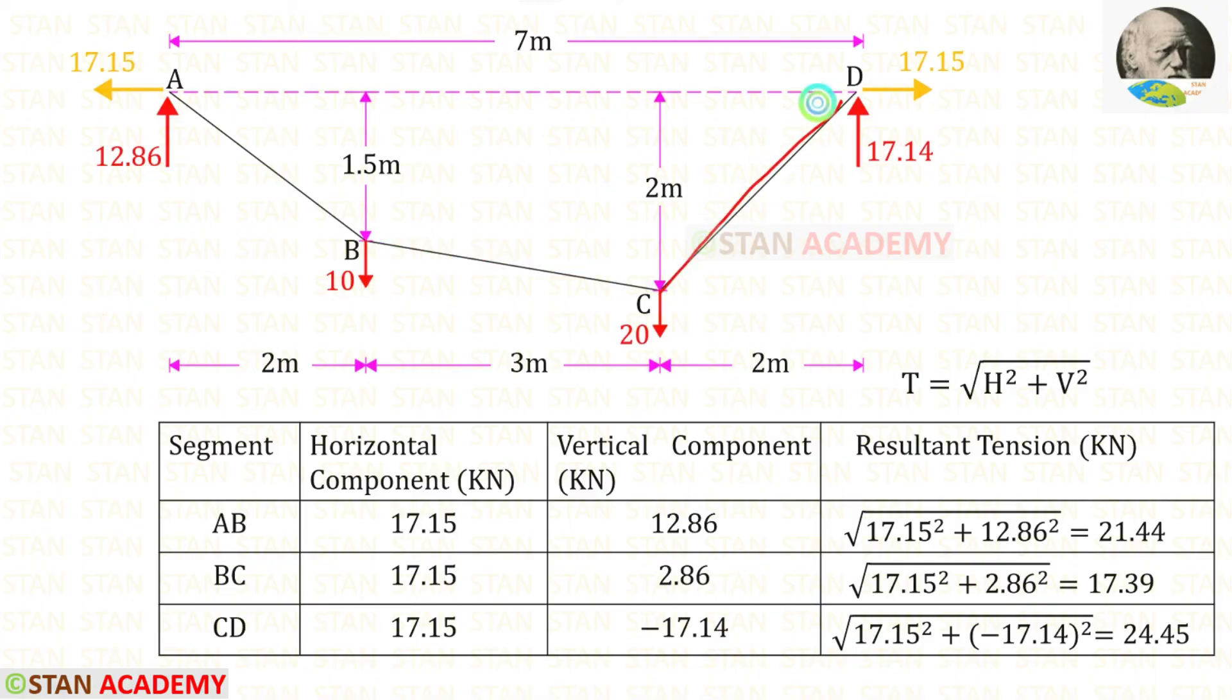For CD it is 12.86 minus 10 minus 20 so we will get minus 17.14. Then using this formula we can find the tension.